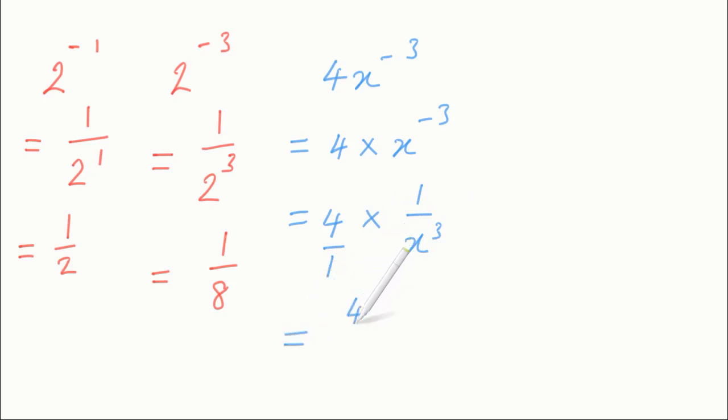When you multiply fractions, the rule is tops together, bottoms together. So 4 times 1 is 4, and 1 times x cubed is x cubed. With 5y to the negative 2, the y to the negative 2 is going to be on the bottom like y squared, and that 5 is going to be on the top.